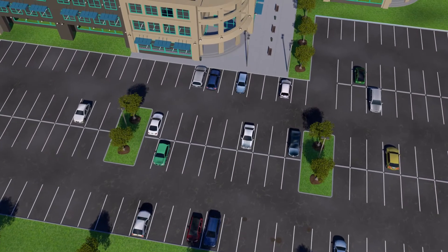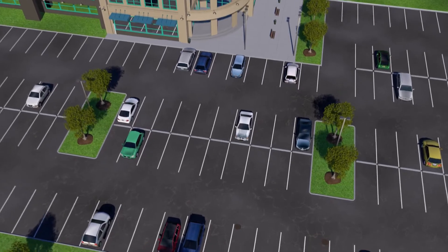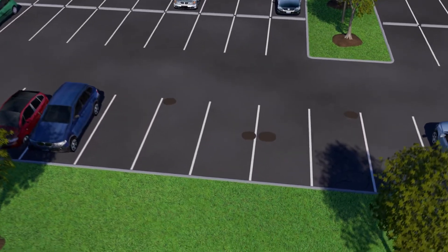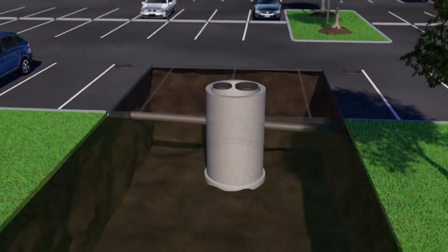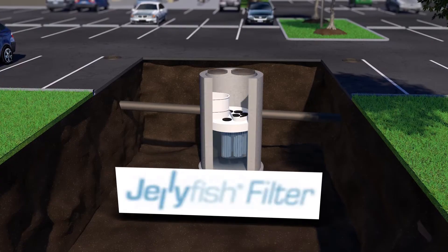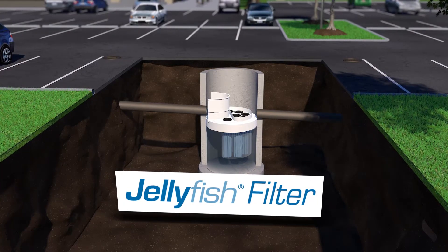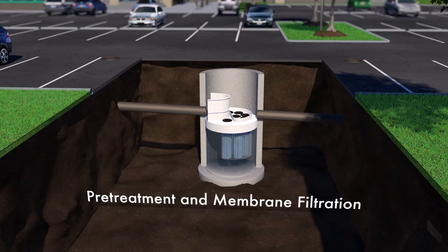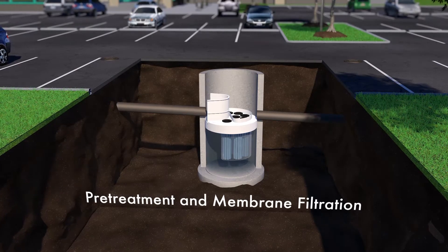With increasingly stringent stormwater management regulations, finding a stormwater treatment solution that is effective and efficient is more challenging than ever. CONTECH Engineered Solutions introduces the Jellyfish Filter, an engineered stormwater treatment technology featuring pre-treatment and membrane filtration in a compact system.